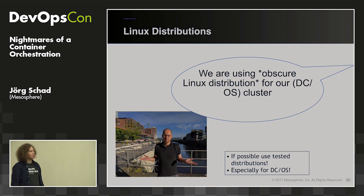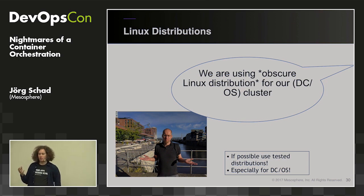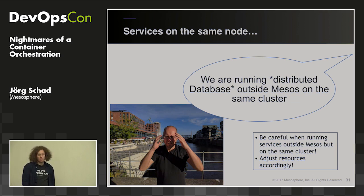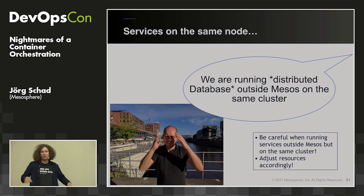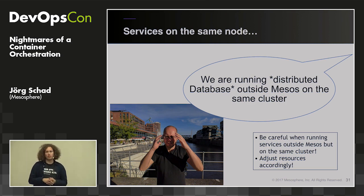Linux distributions: there's a certain tested budget, so stick to the recommended distributions. Those guarantee it will work in the future, whereas others might break. Services on the same node: container schedulers assume they own the entire node for scheduling decisions. If you're running something outside the container orchestrator — like deploying Cassandra or Kafka outside your Mesos cluster — you must isolate that workload and adjust its resource consumption similarly to how the orchestrator would isolate it.